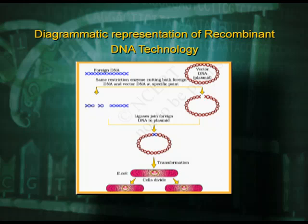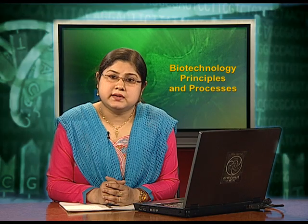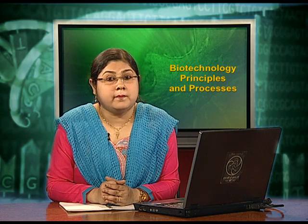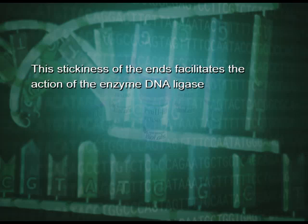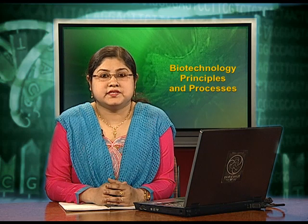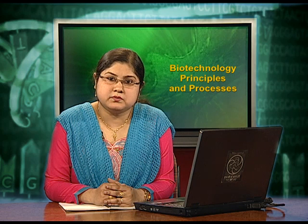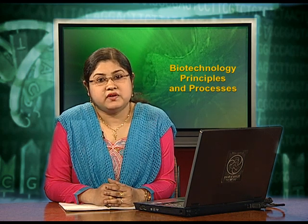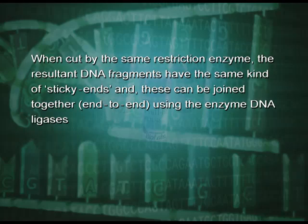The entire process of recombinant DNA technology can be seen through this diagram. The restriction enzymes cut the strand of DNA a little away from the center of the palindrome sites, but between the same two bases on the opposite strands. This leaves single-stranded portions at the ends — overhanging stretches called sticky ends on each strand. These are named so because they form hydrogen bonds with their complementary cut counterparts. This stickiness of the ends facilitates the action of the enzyme DNA ligase. Restriction endonucleases are used in genetic engineering to form recombinant molecules of DNA composed of DNA from different sources or genomes. When cut by the same restriction enzyme, the resultant DNA fragments have the same kind of sticky ends and can be joined together end to end using DNA ligase.